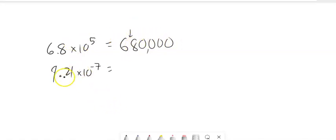And then this is 9.21 times 10 to the negative 7. So this is 9.21 divided by 10 seven times. So that's going to move to the left seven places. And fill them with zeros, 1, 2, 3, 4, 5, 6, 7. So that's equal to 0.000000921.